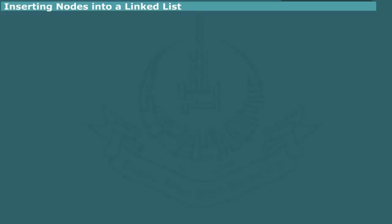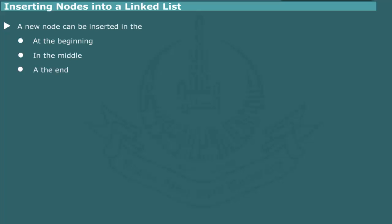Inserting nodes into a linked list. After a list object has been created, a new node can be inserted at the beginning, in the middle, or at the end of the list. Different algorithms are used to handle each of these cases. Let us explore in detail the steps involved in these algorithms.